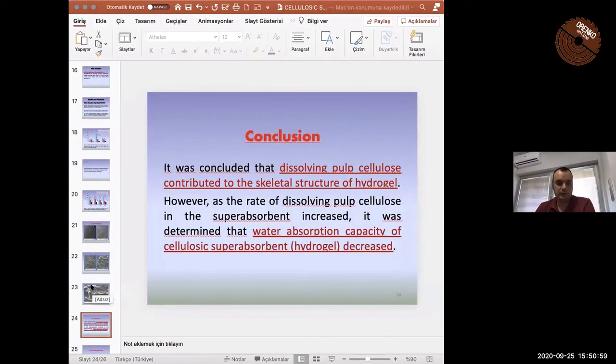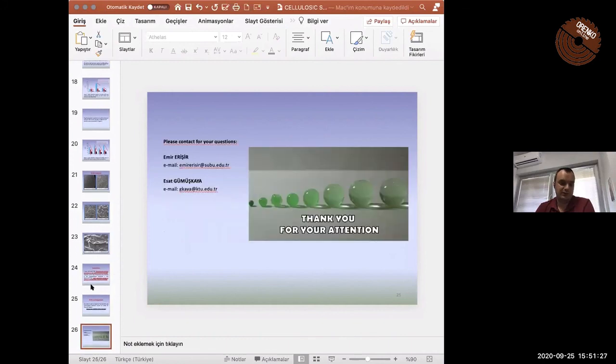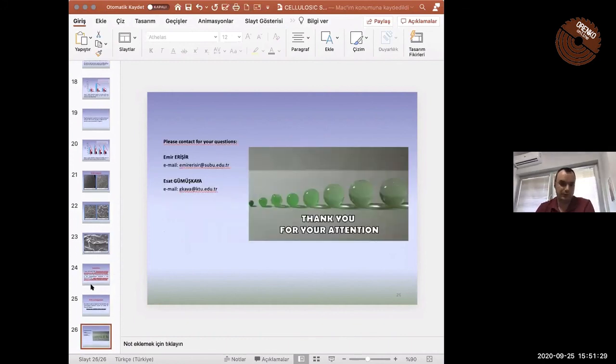It was concluded that dissolving pulp cellulose contributed to the skeletal structure of hydrogen. However, as the rate of dissolving pulp cellulose in the superabsorbent increased, it was determined that water absorption capacity of the cellulose superabsorbent decreased. We want to acknowledge the scientific and technological research council of Turkey for financial support. Also you, thank you for your attention.